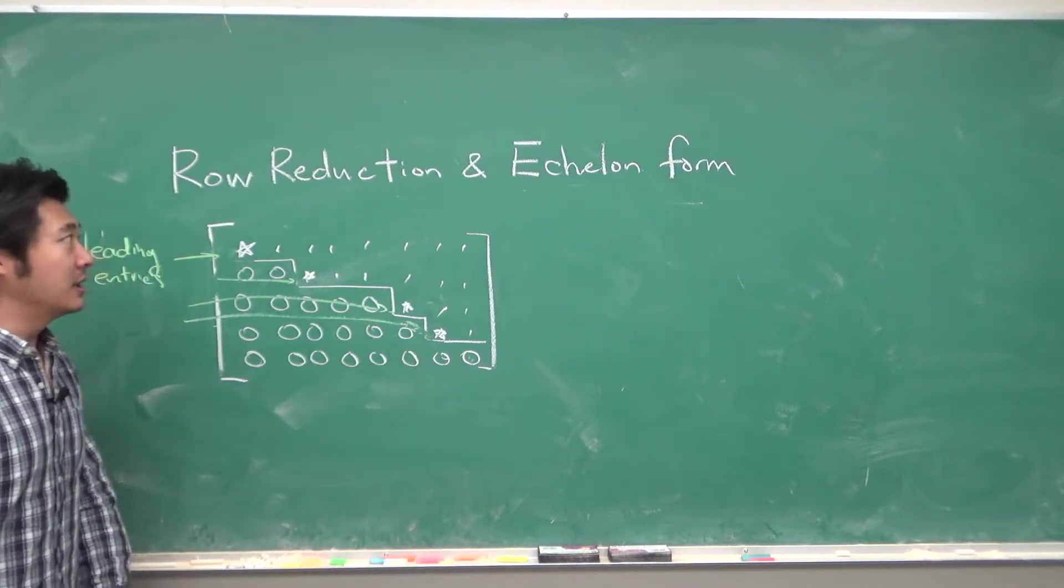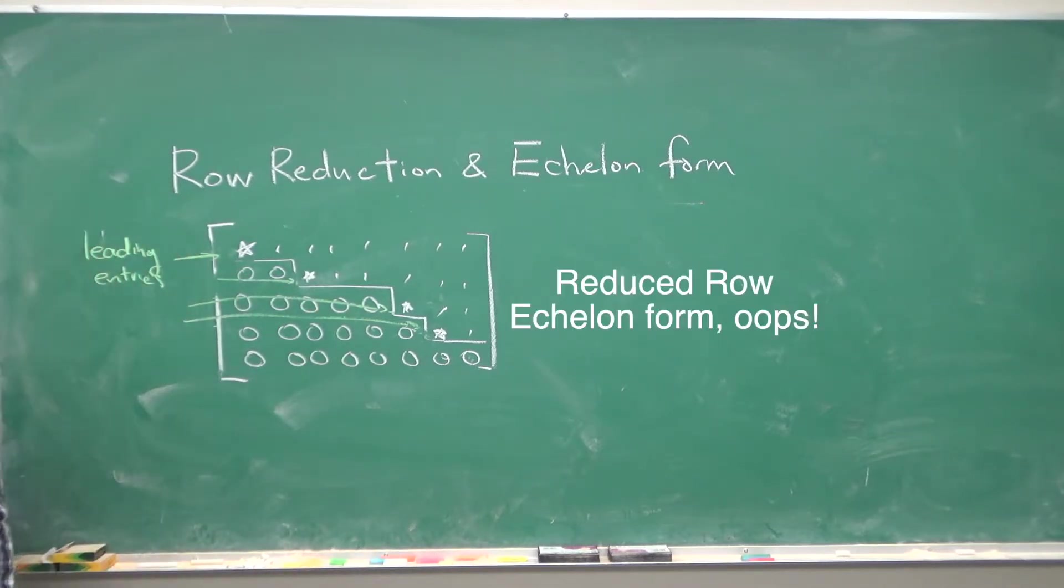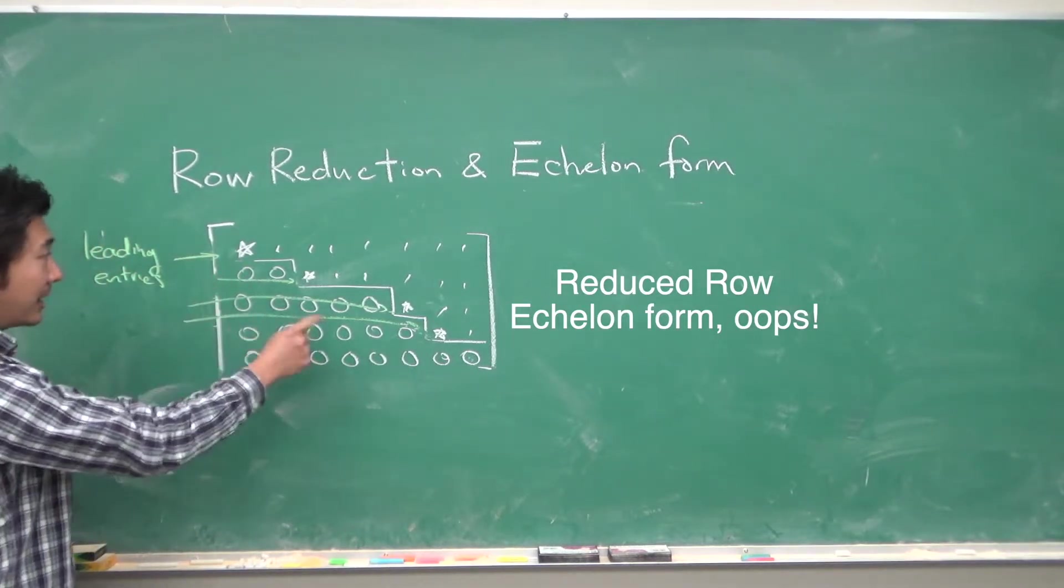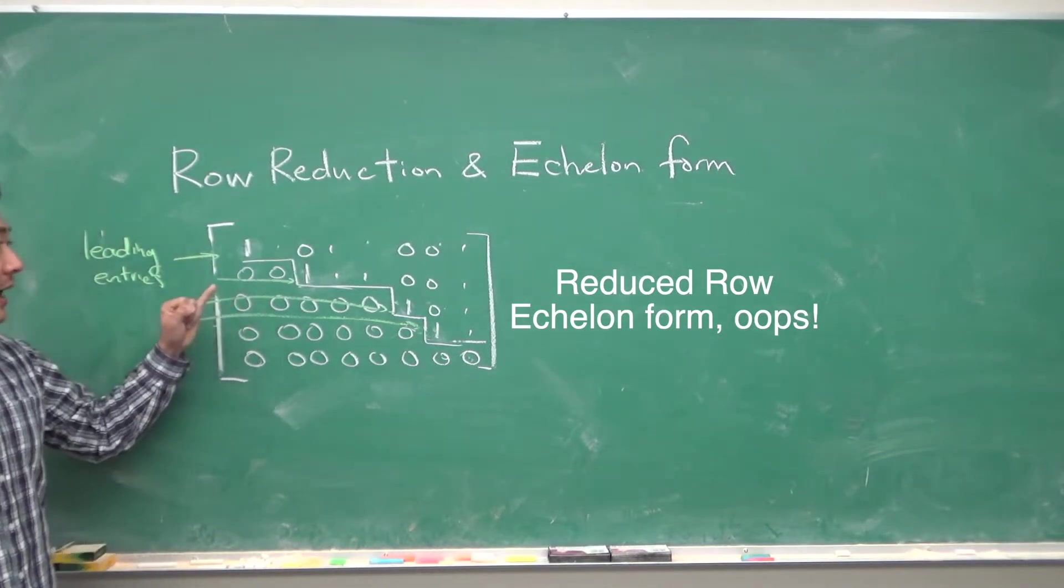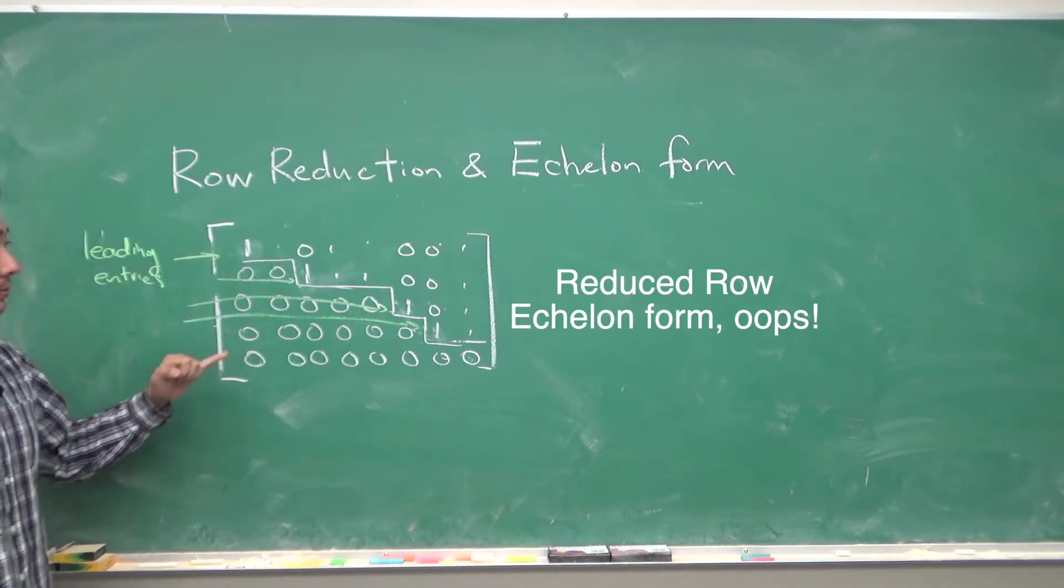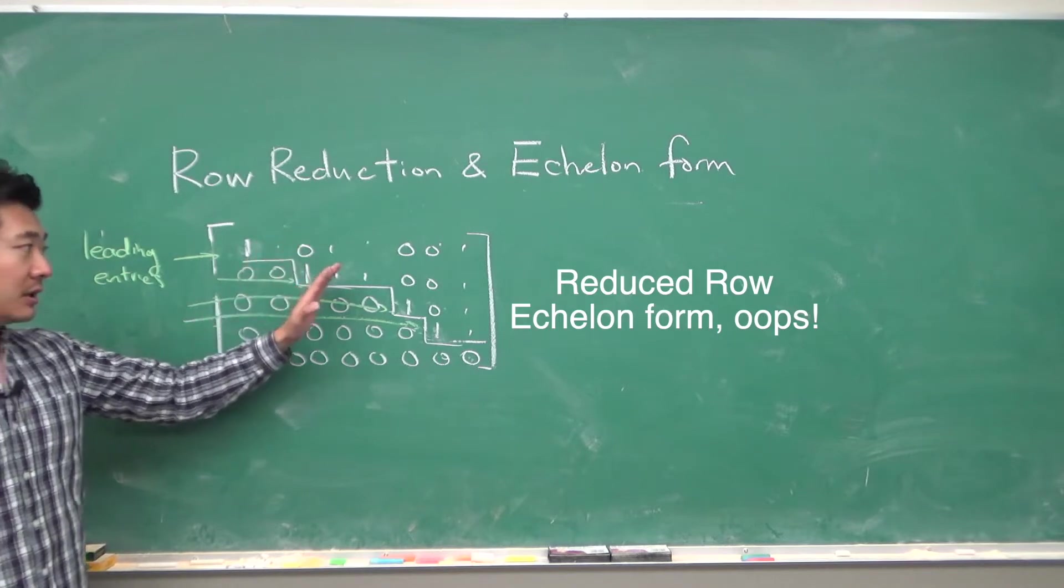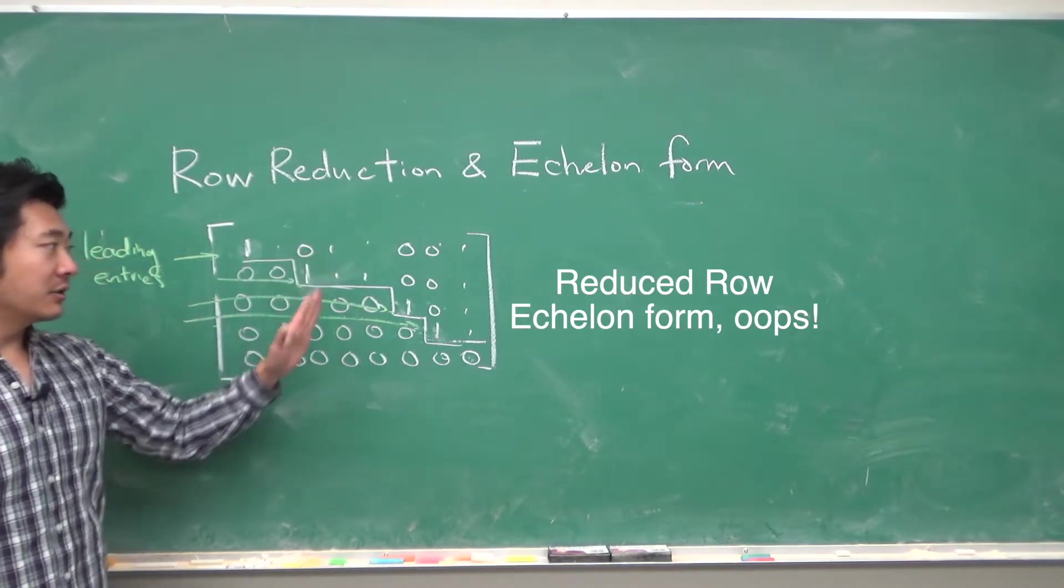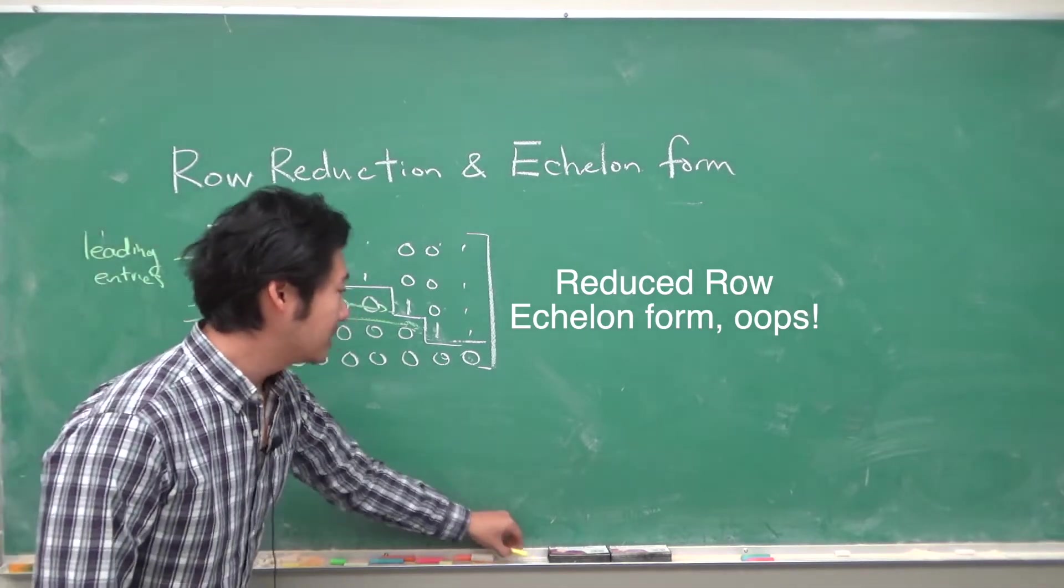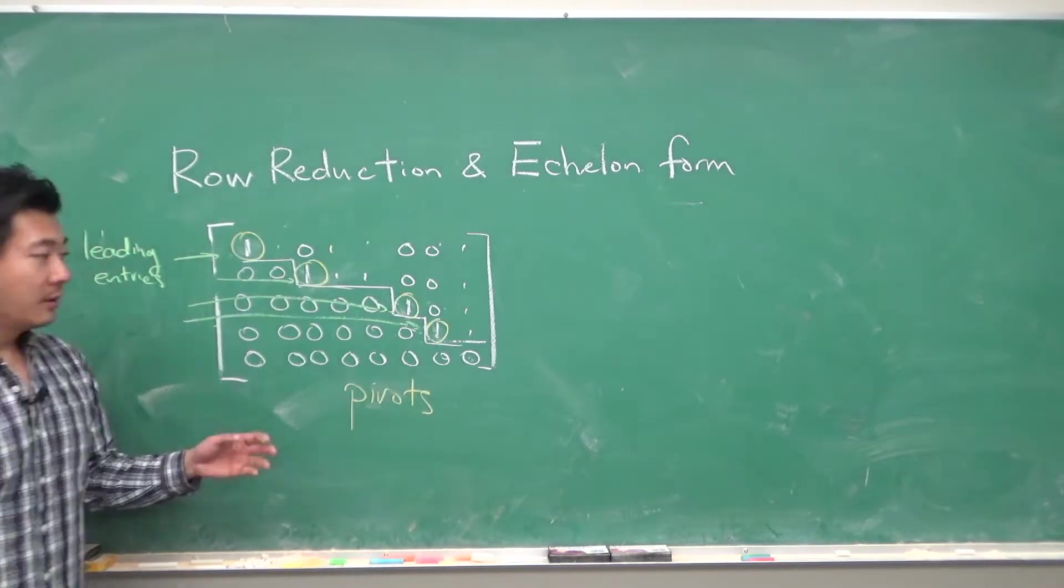We say that something is in row-reduced echelon form if, on top of that, each of these leading entries are 1, and every other number in that column is 0. Now, other columns that don't have these leading entries can be whatever number they want to be. And we call these pivots.